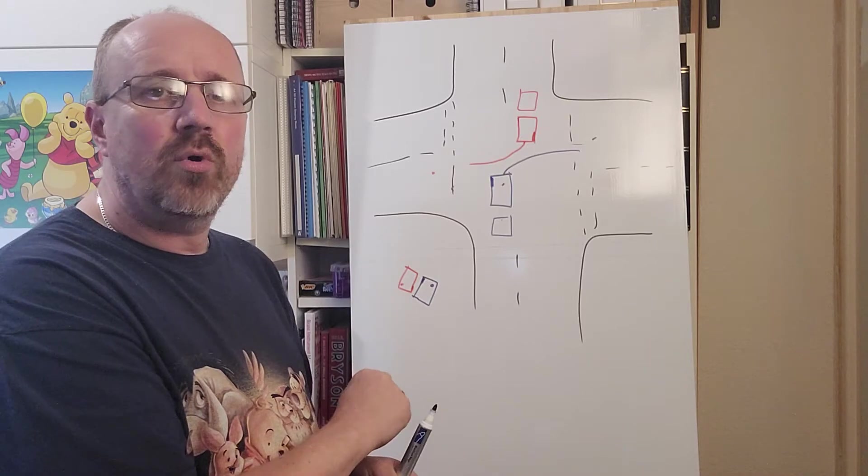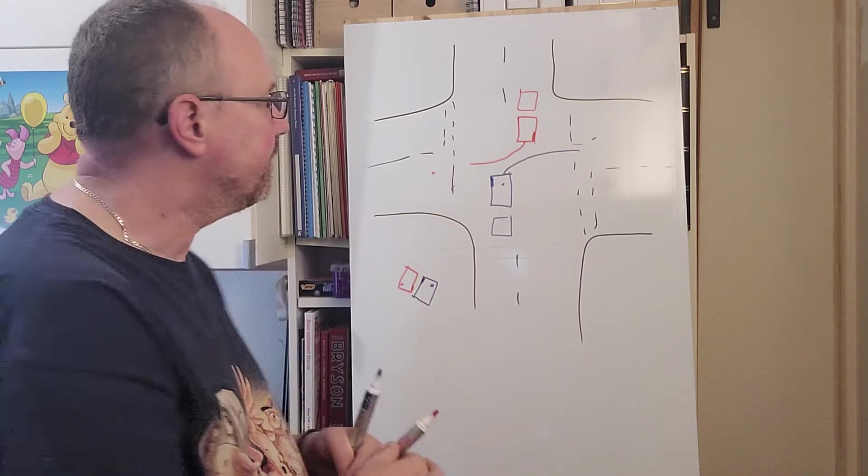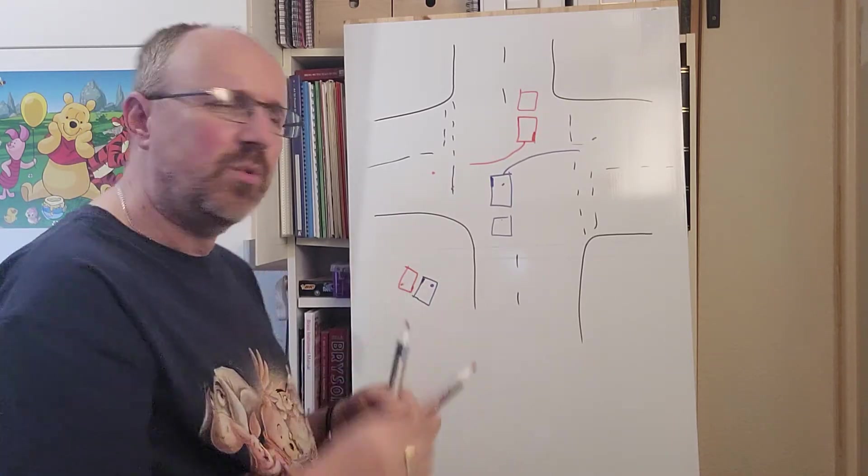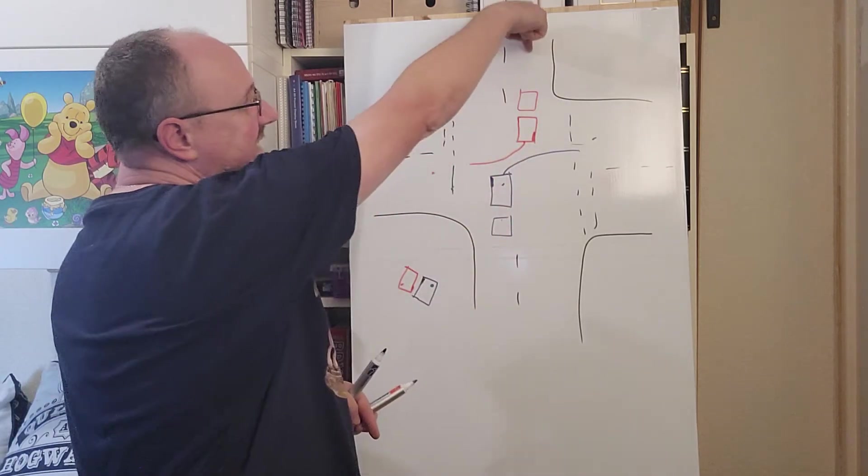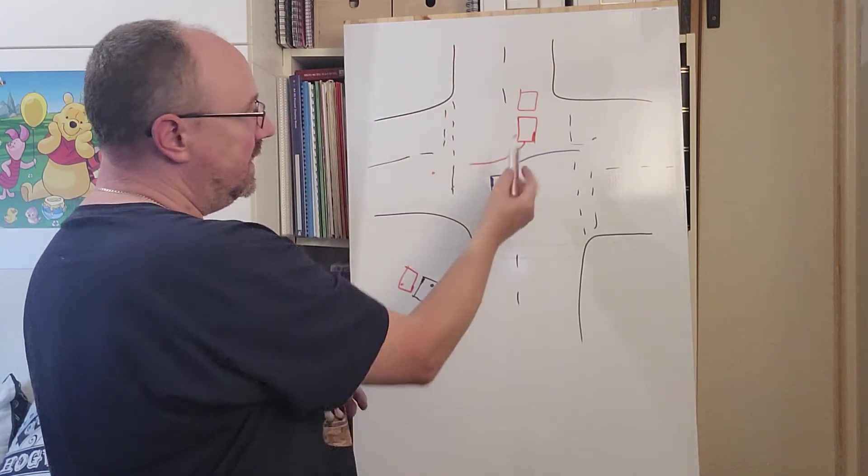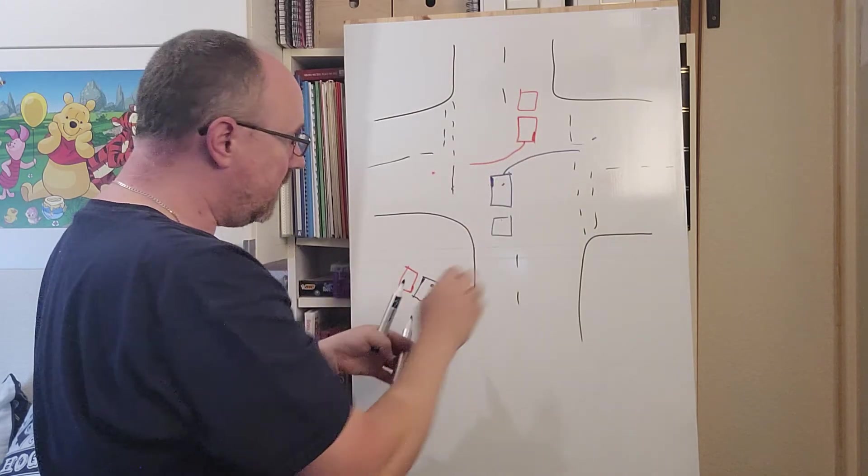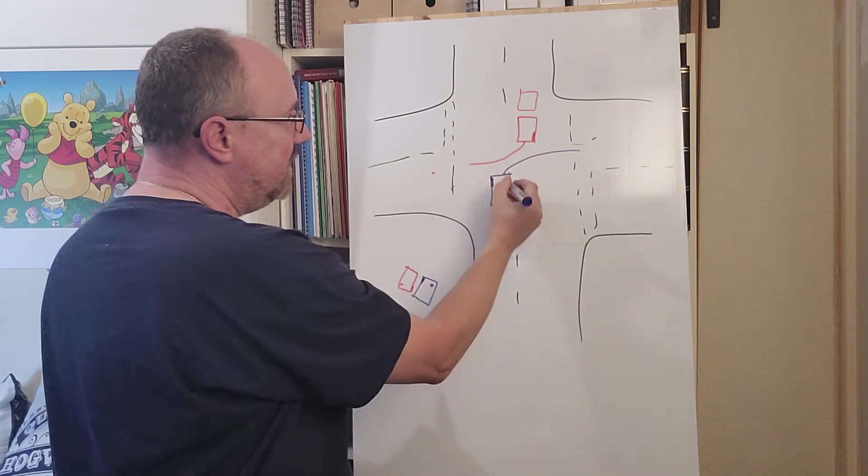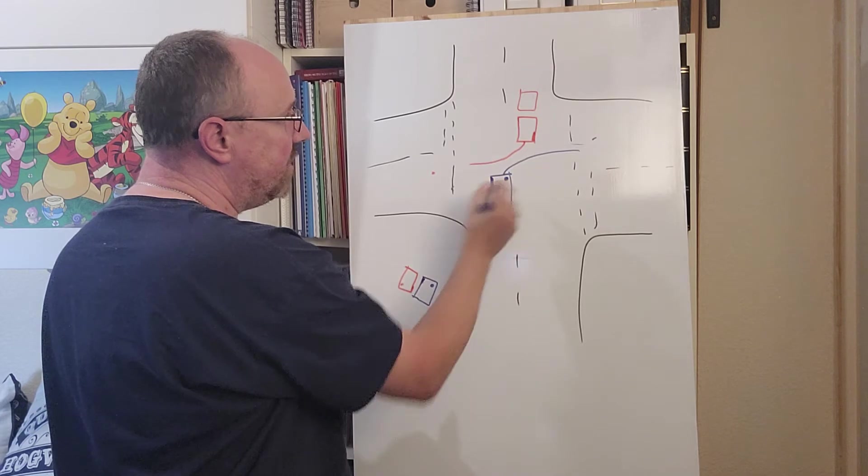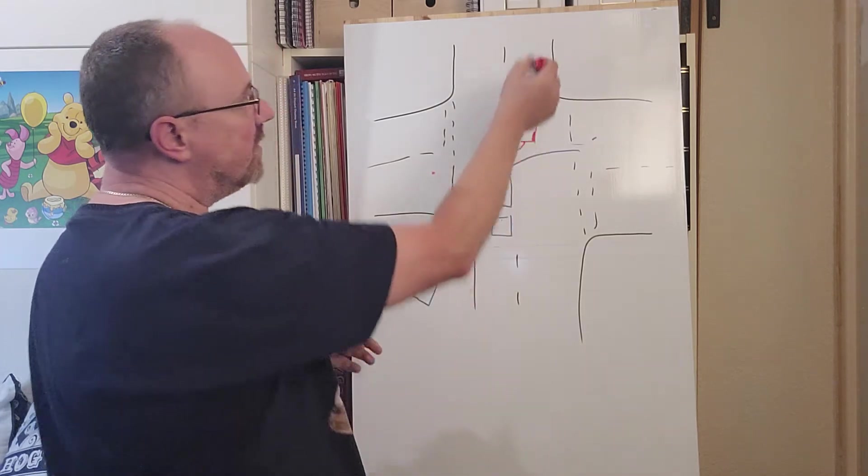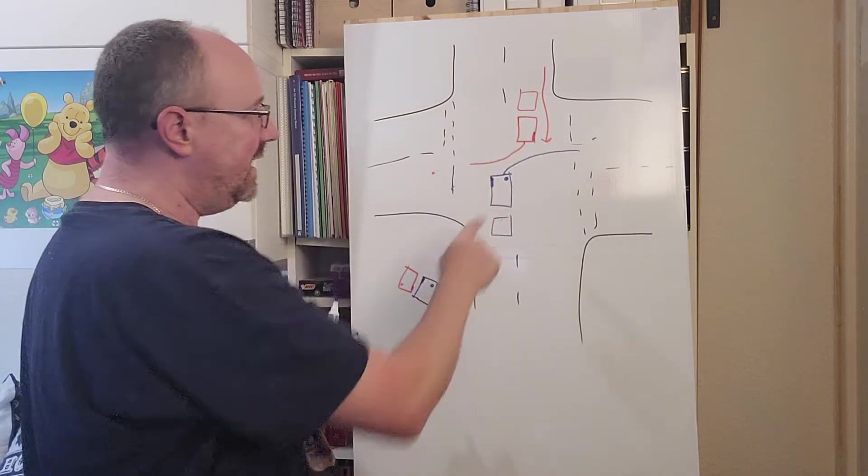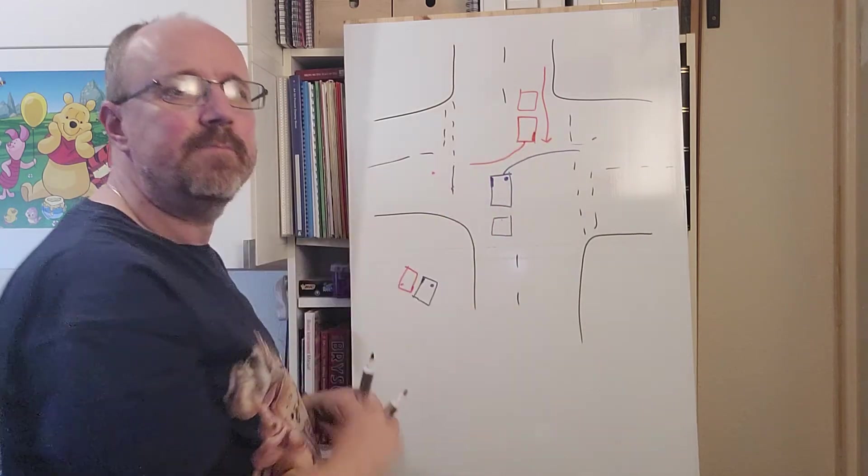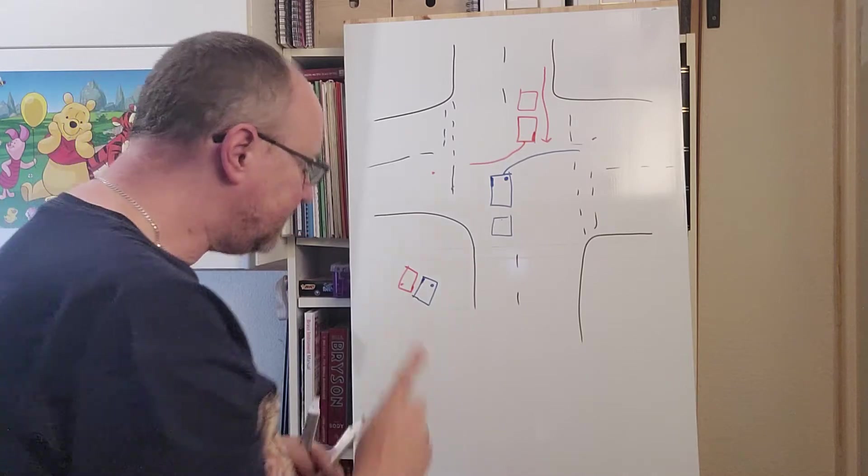This is brilliant for traffic flow. You're not getting tangled up with each other, but your view of the road ahead is actually blocked by this red car. So imagine you're sitting in the blue car. Your view of what's coming this way is blocked by this red car. So there's a disadvantage of it.